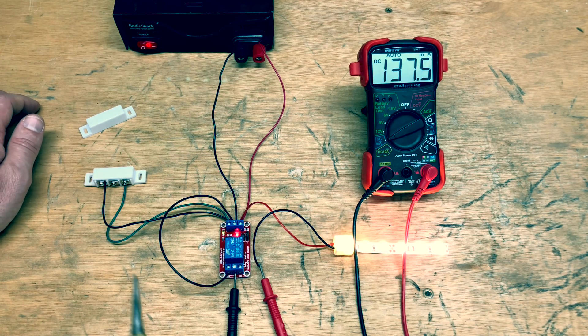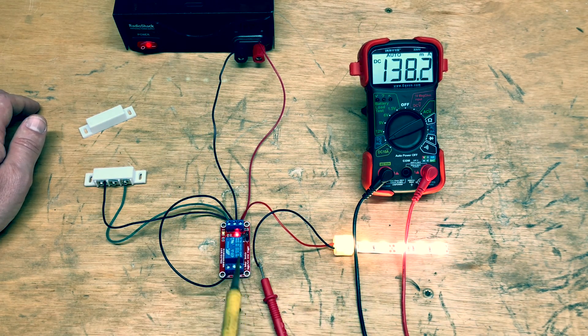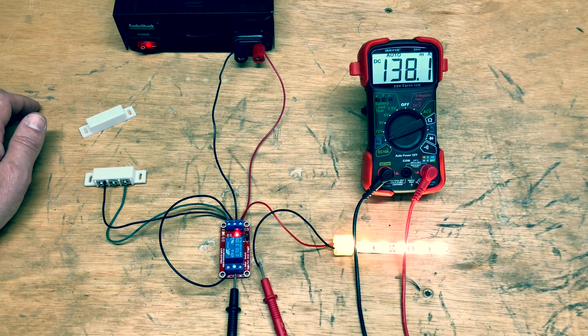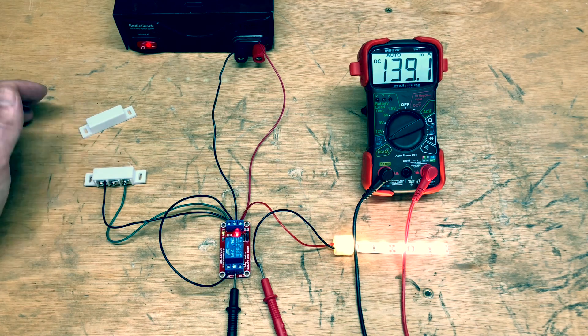So you can see that all the current is running through the LED strip which is what we want, and through the relay which is rated for this. This goes up to 10 amps and we're not even at 1 amp yet, and only 1.25 milliamps.